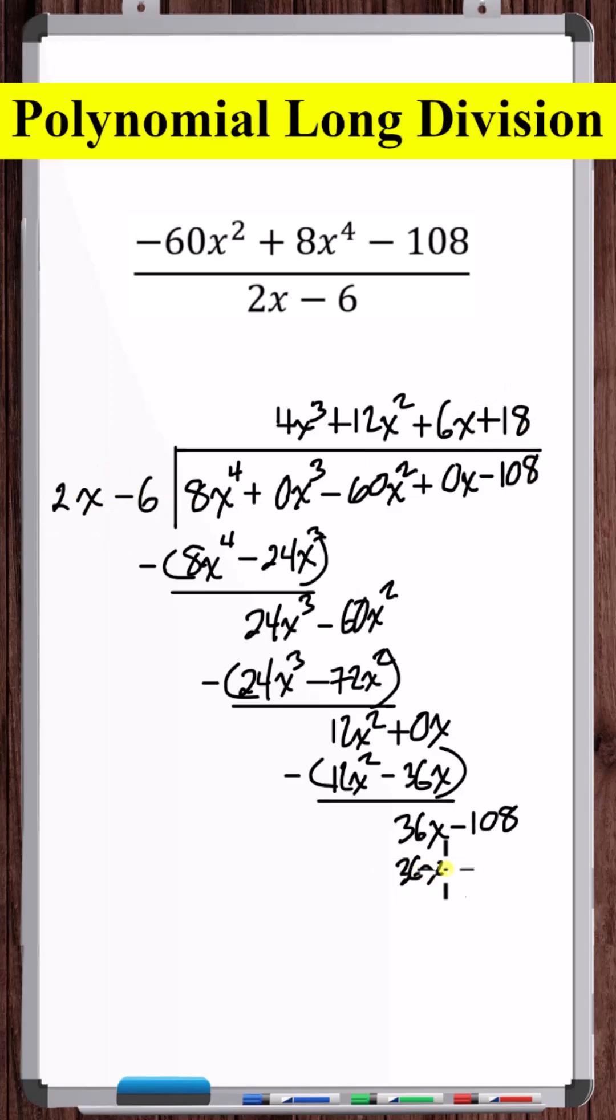Multiply 18 by the divisor. Subtract these two expressions. We have a remainder of zero. So dividing this polynomial by this polynomial, the answer is 4x cubed plus 12x squared plus 6x plus 18.